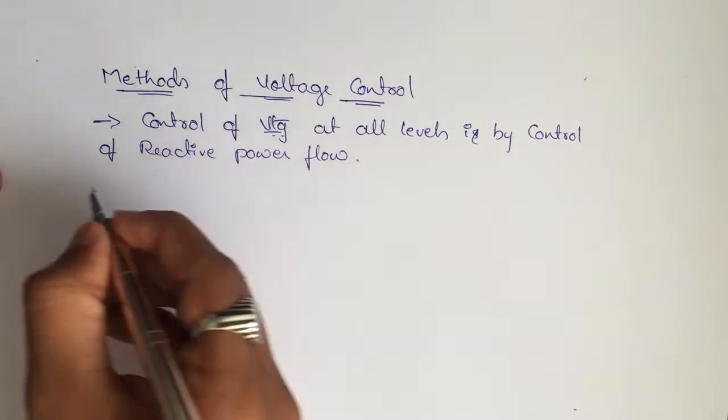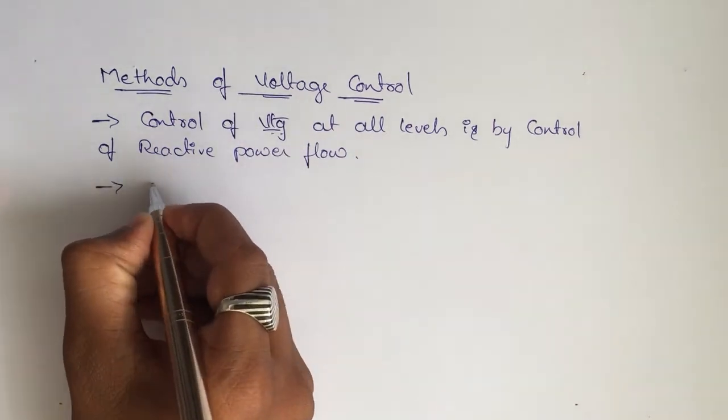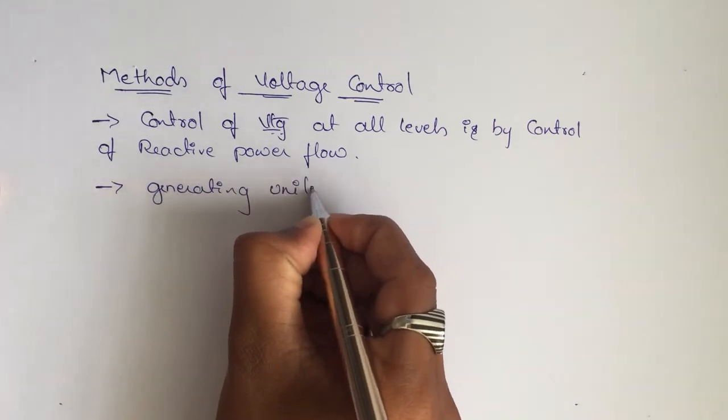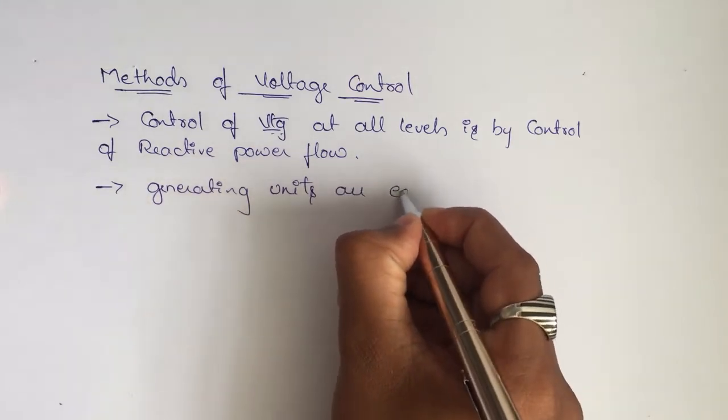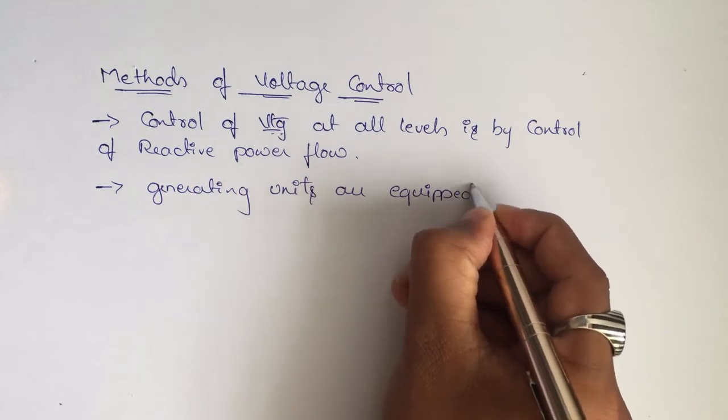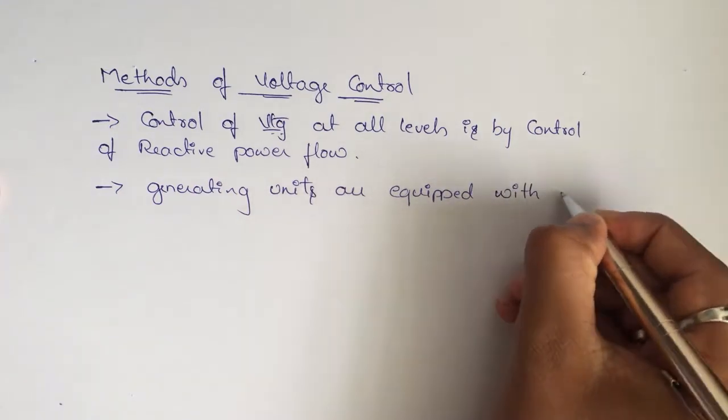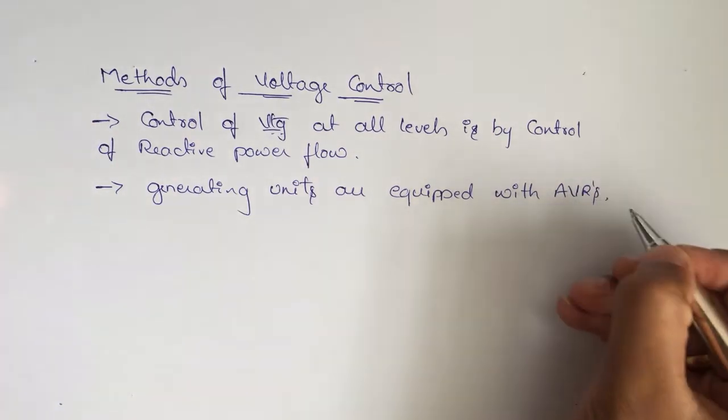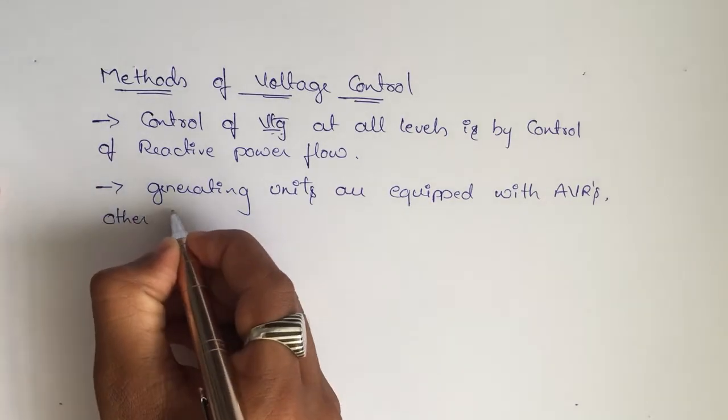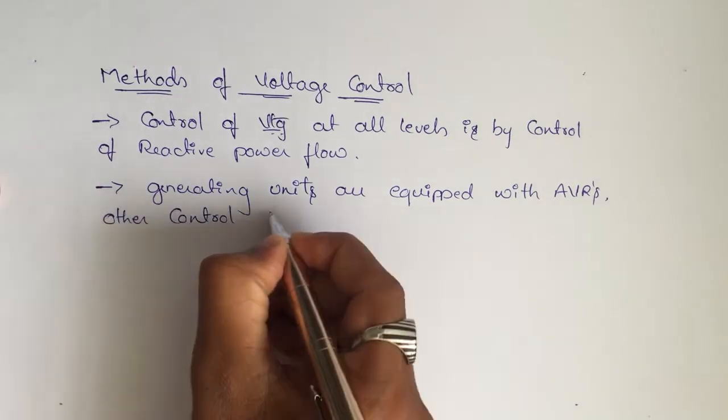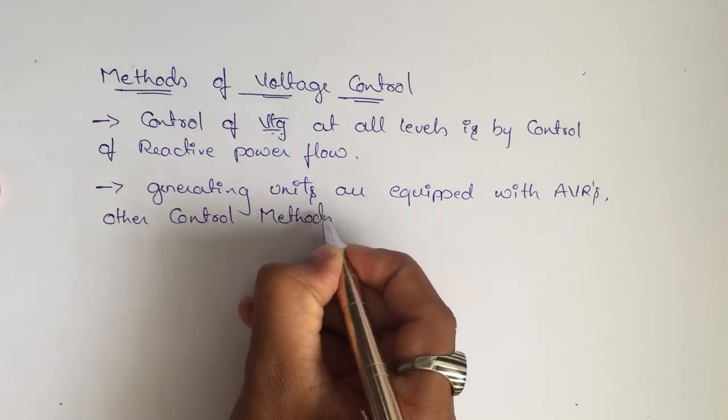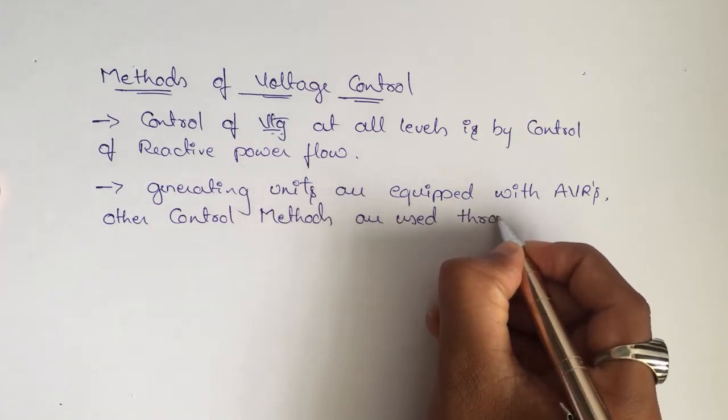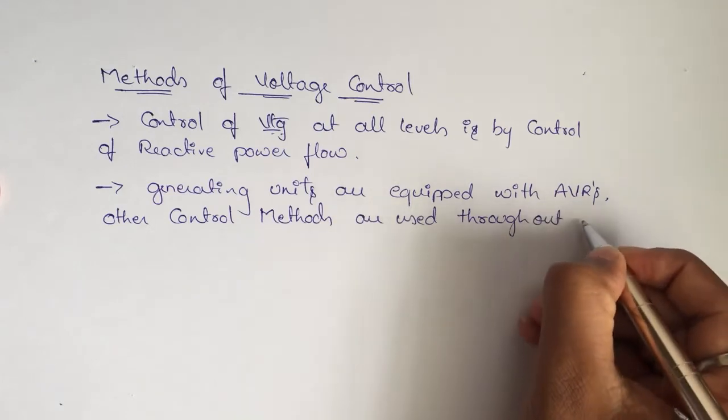Generating units are equipped with AVRs - automatic voltage regulators. Other control methods are used throughout the system.